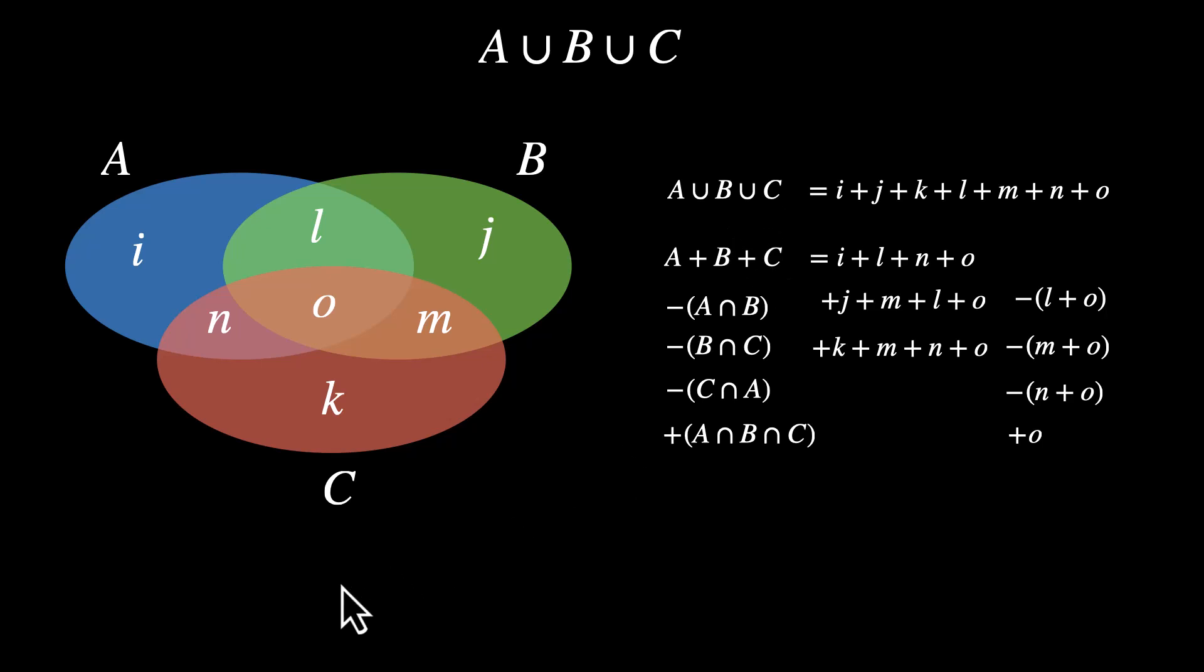We can write this down. A union B union C, that's equal to A plus B plus C, which means we take all three sets and add them up. Then we subtract the overlaps minus A intersection B minus B intersection C minus C intersection A. But while subtracting, we subtract this part, which is common in all three of them thrice, which means we'll now have to add this back. So we'll have plus A intersection B intersection C.